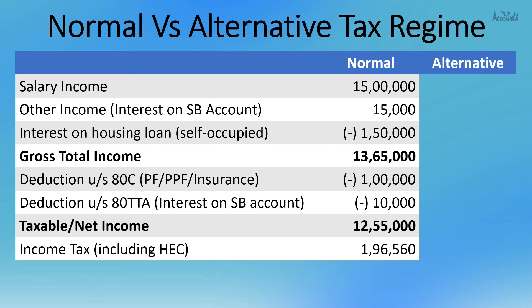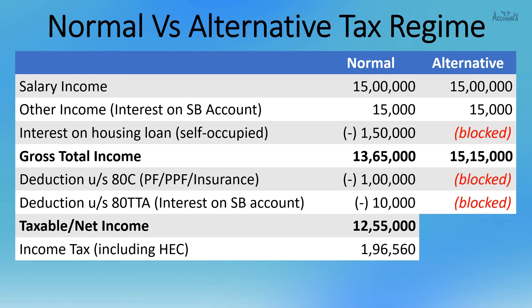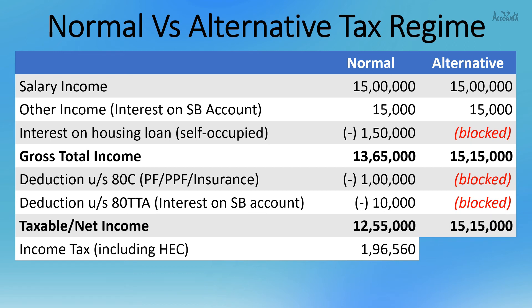Under the alternative tax regime for the same situation, salary and other income remain the same, but the interest on housing loan deduction and deductions under 80C and 80TTA are all blocked. So the taxable income becomes 15,15,000, and the tax payable is 1,99,680. It is better to choose the normal tax regime in this situation.